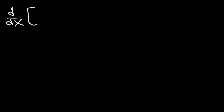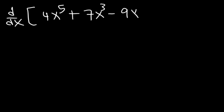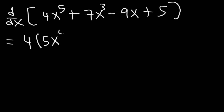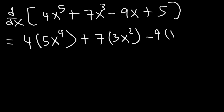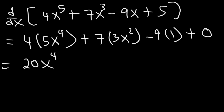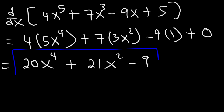Now what about the derivative of a polynomial function? 4x to the 5th plus 7x cubed minus 9x plus 5. The derivative of x to the 5th is 5x to the 4th. The derivative of x cubed is 3x squared. The derivative of x is 1. The derivative of a constant is 0. So 4 times 5 is 20, 7 times 3 is 21, and the answer is 20x to the 4th plus 21x squared minus 9. You just have to differentiate each term separately.